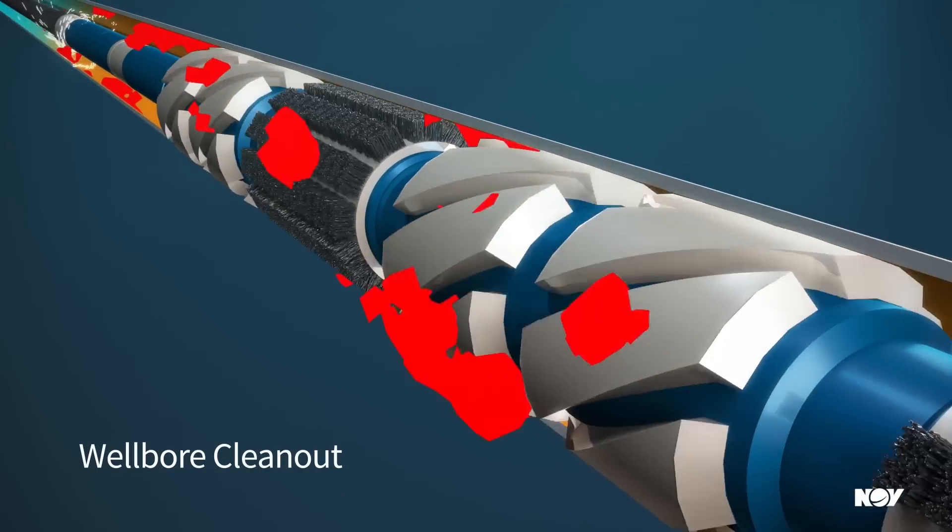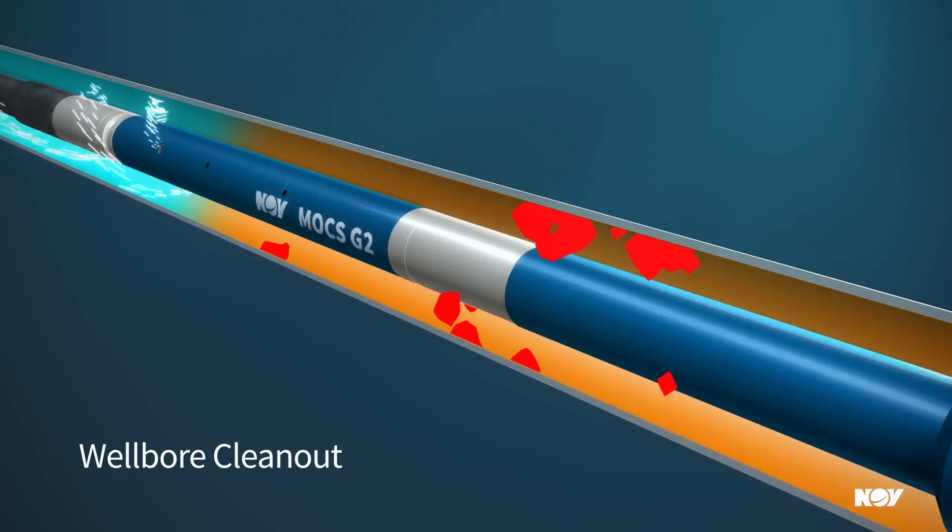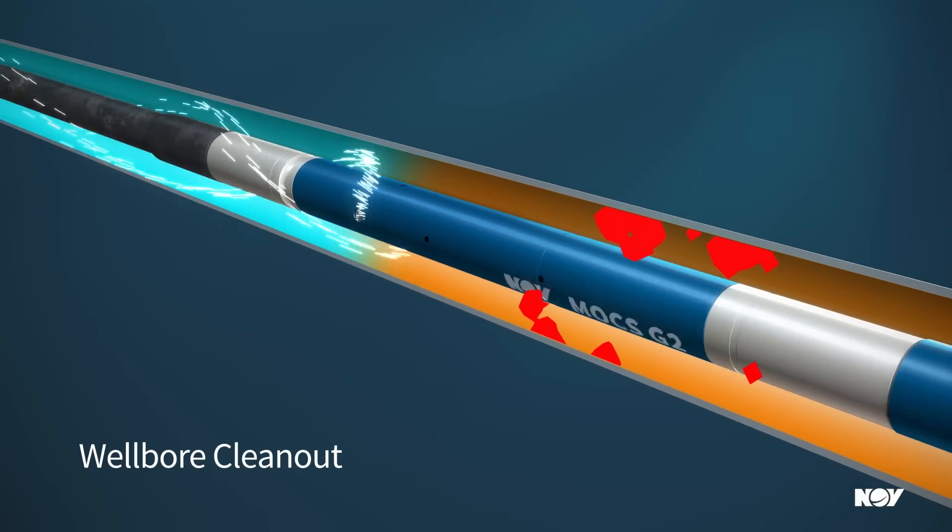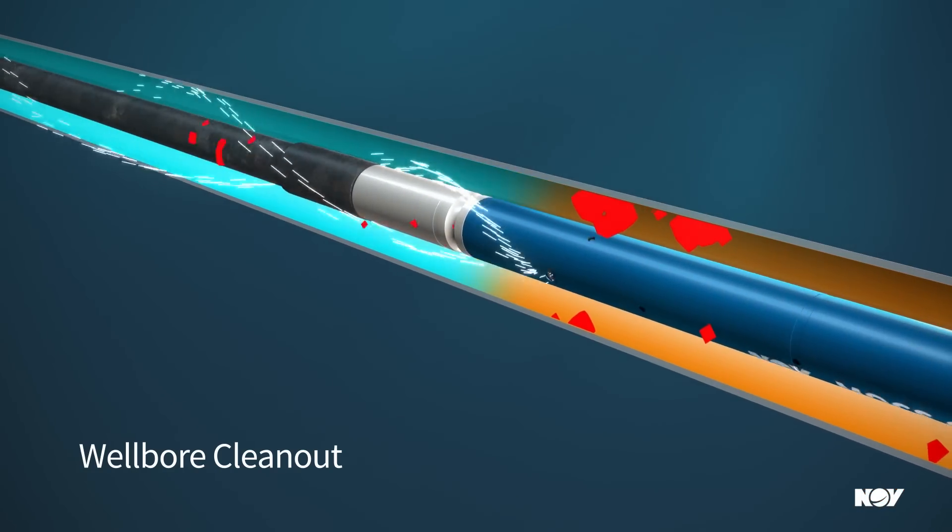The MOX G2 can improve wellbore clean-out, removing debris and residue from the riser, BOPs, casing and liner strings.